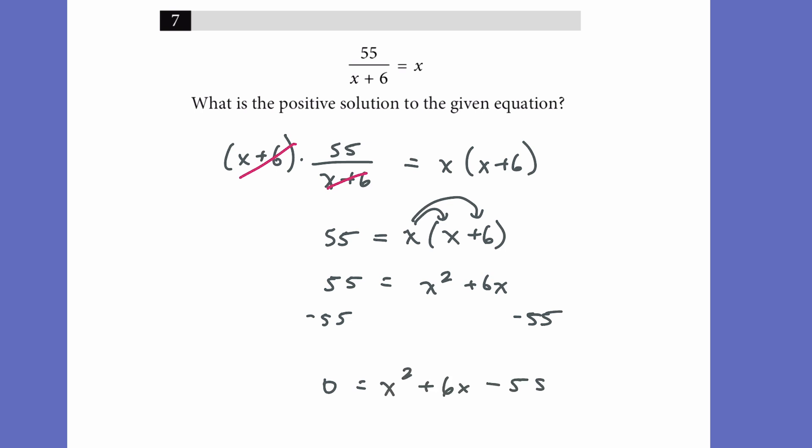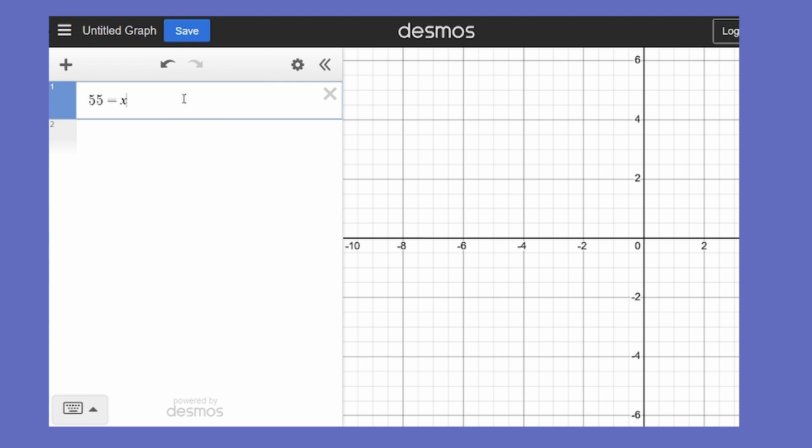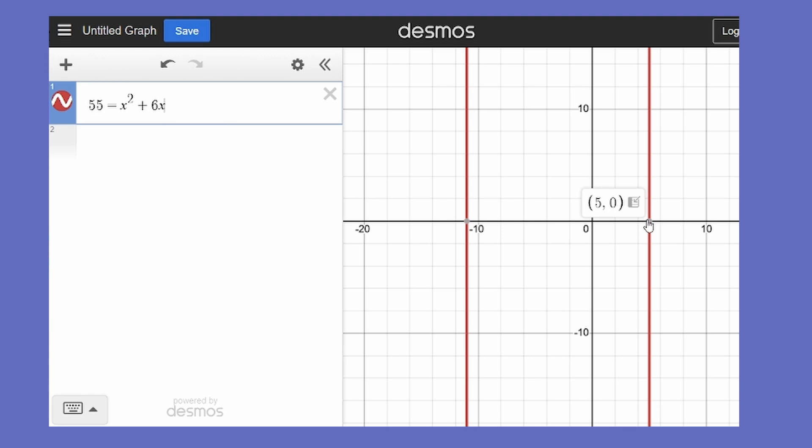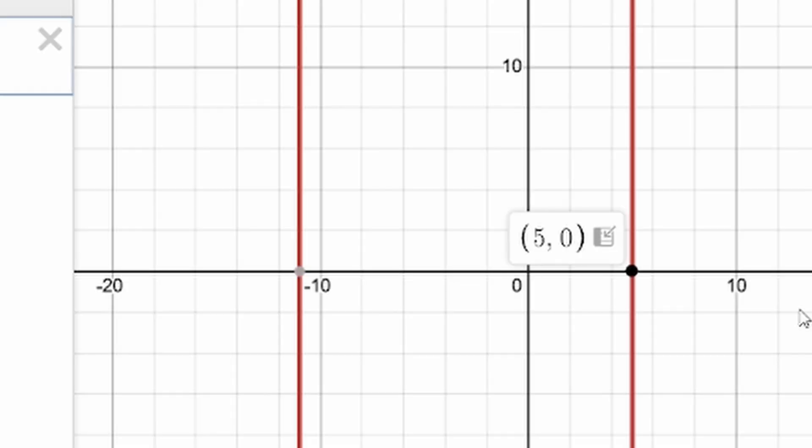But let's say you don't know the quadratic equation. That's where Desmos can come in handy. Simply type this into Desmos, and wherever it crosses the x-axis, that's what the answer for x is. Whenever y equals 0, x will equal some value. And again, there will be two places where it crosses since it's a quadratic, but we're looking for the positive solution. So looking on Desmos, we see that the positive solution is x equals 5. We also have negative 11 as a solution, but that's negative, so that's not the one they're looking for.